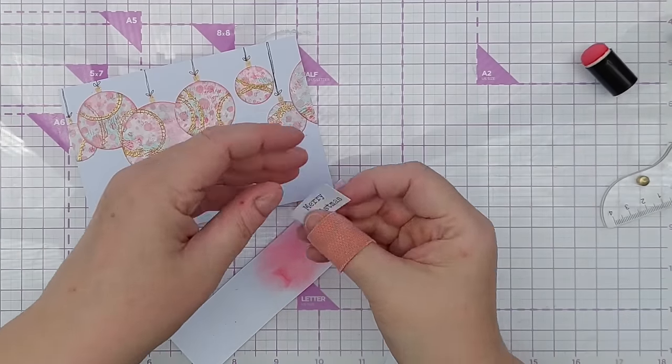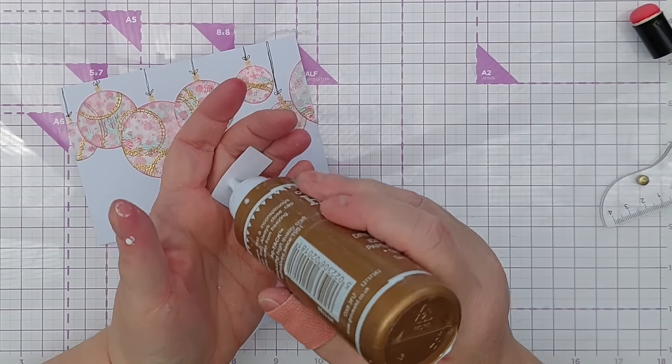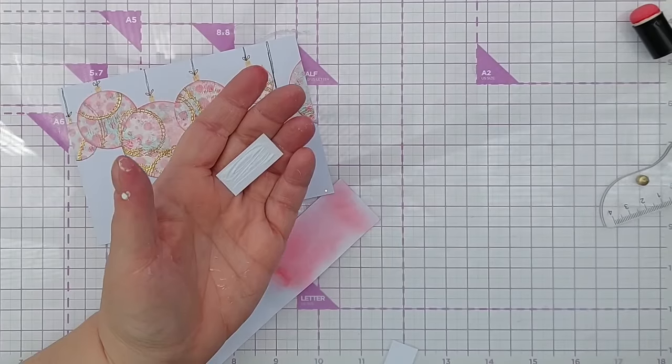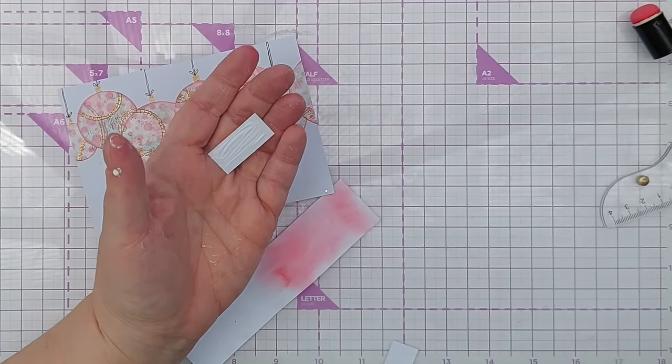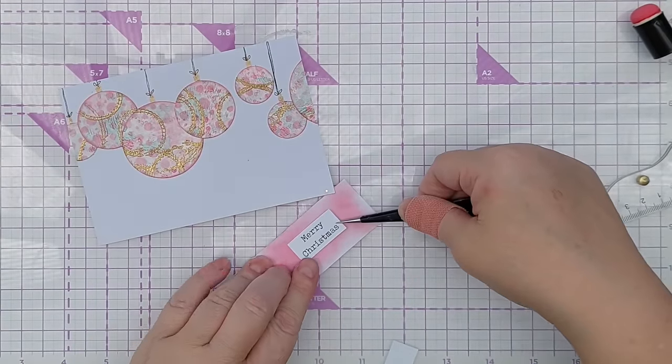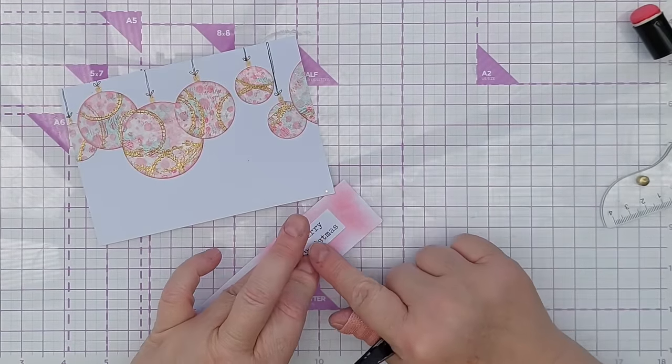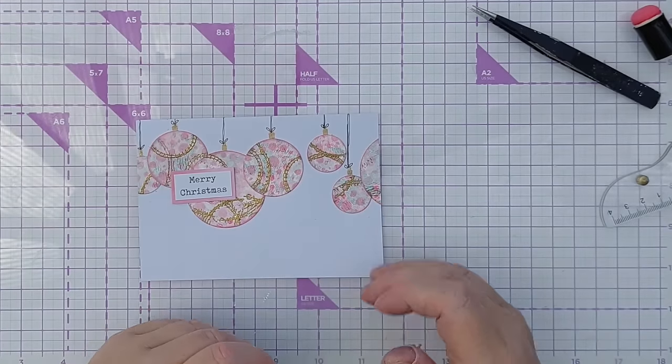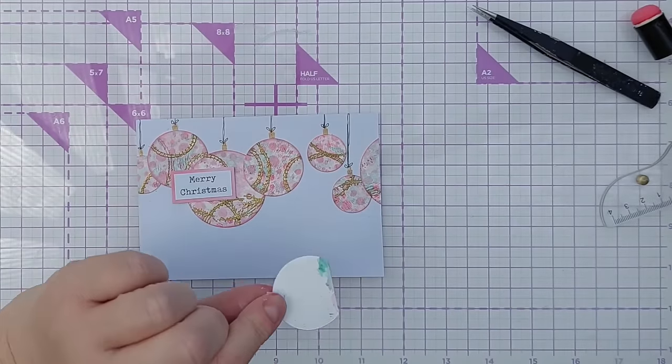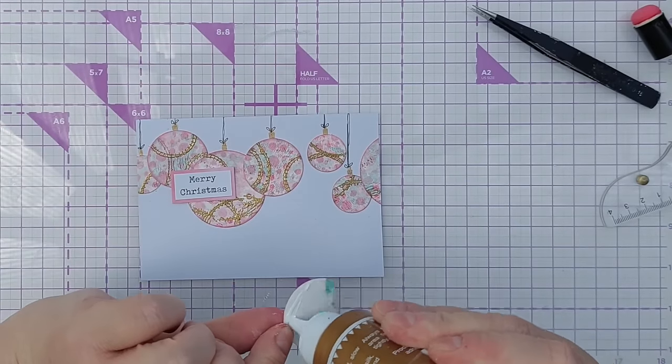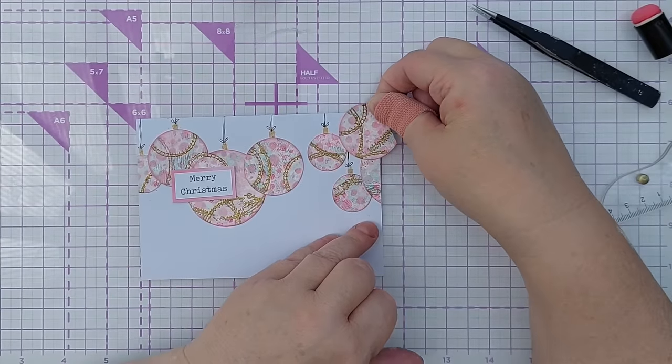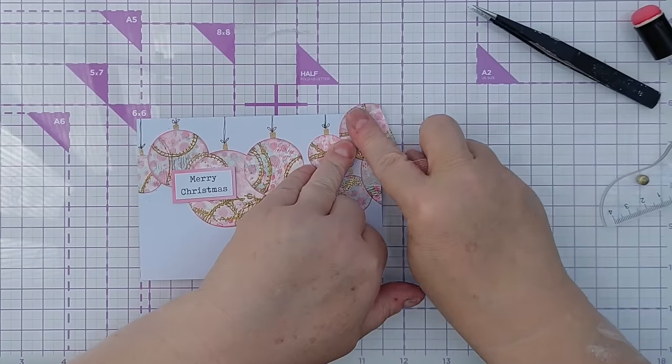And for my sentiment I've got a printed Merry Christmas. These are the ones that I used in the previous Not Just Christmas in July video. And I'm going to mount that on a bit of paper that I have coloured with one lipstick. Before I stick that down I think I'm going to use this partial baubles to cover up the string on this baubles here. I'm not entirely happy with it.